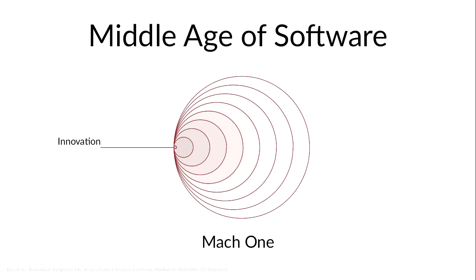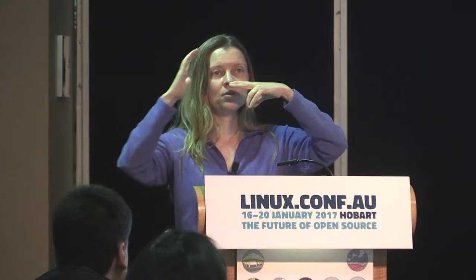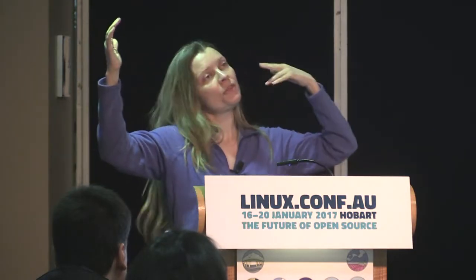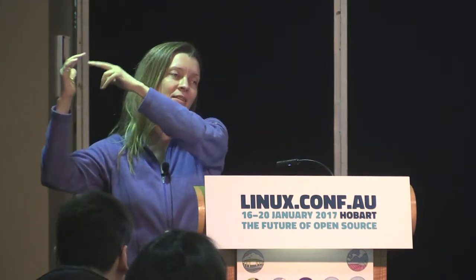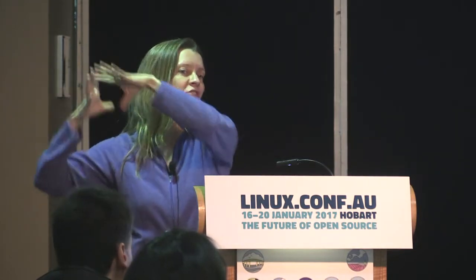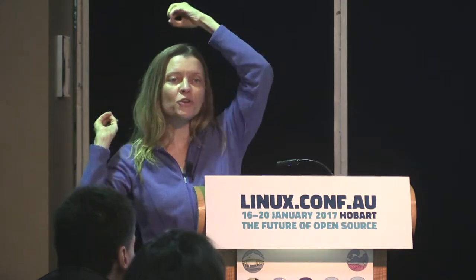The next phase of the analogy: when an object travels at exactly the speed of sound, the sound waves start piling up and piling up, creating this enormous turbulent zone. This was called the sound barrier — people thought it was unbreakable, and pilots died trying to break it. This corresponds to the '80s, when software copyright was launched and things like Windows, Mac, and Oracle began.